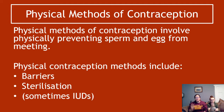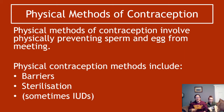Physical methods of contraception involve physically preventing sperm and egg from meeting. Physical methods include barriers and sterilisation. The SQA course documents also specify that IUDs are a physical contraception method — though in reality they release chemicals that prevent implantation. Under the SQA documents an IUD is listed as a physical method, though I don't understand why they've called it that.